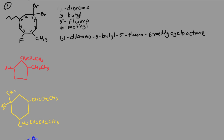Let's go to this structure here. We have a cyclopentane, and we have a methyl, an ethyl, and a propyl group. The substituents are in one, two, three locations. Which one do we start with? We can either number this carbon one, or number the carbon with the methyl group carbon one. What we're going to do is number the carbon bonded to the ethyl group as number one.